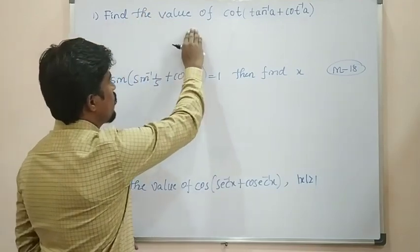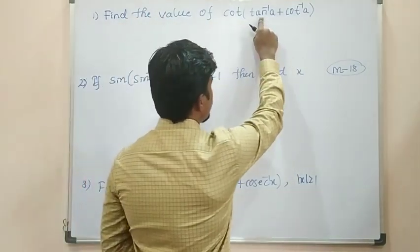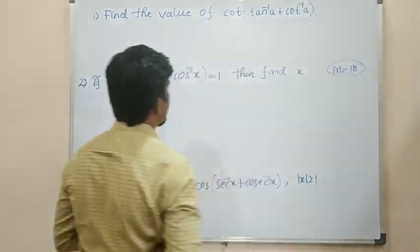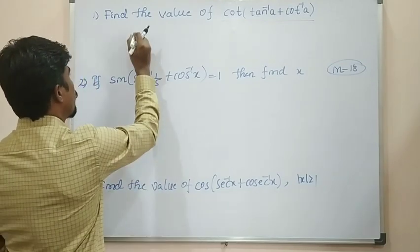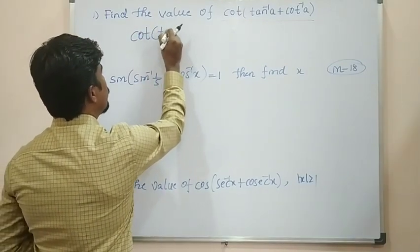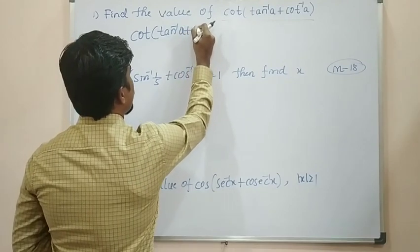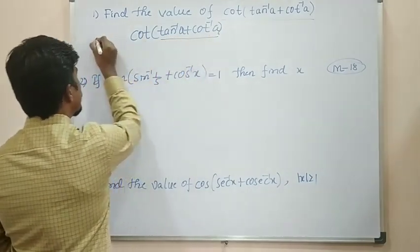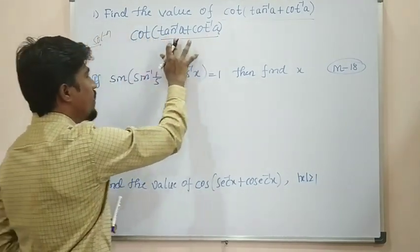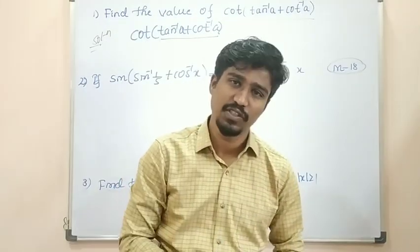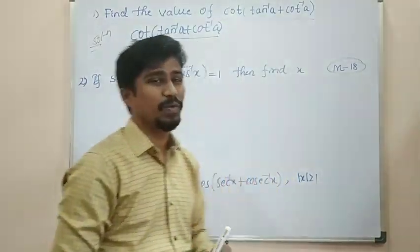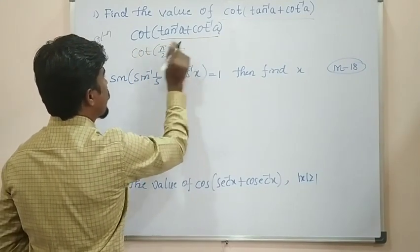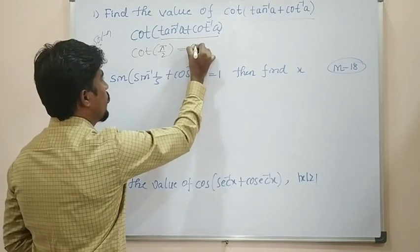The first related problem: find the value of cot of (tan inverse x plus cot inverse x). We know that tan inverse x plus cot inverse x is equal to π/2. So the expression becomes cot of π/2. We know that cot of π/2 is equal to 0. So the answer is 0.